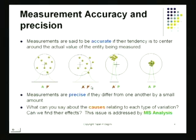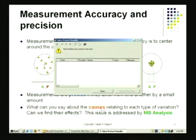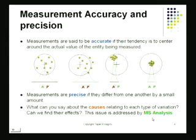A measurement system can suffer from inaccuracy and poor precision. We must understand how much inaccuracy is present and what to do about it, and the same for precision. This is done through measurement system analysis, which gives you a clear picture of how your measurement system is behaving.